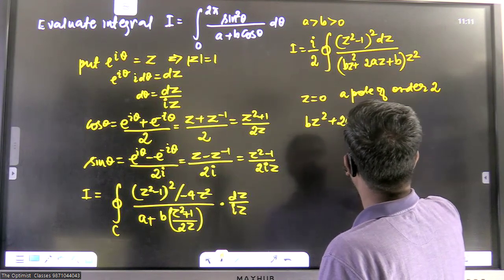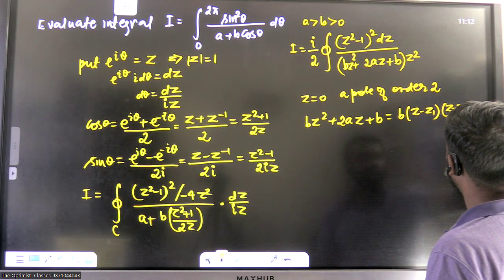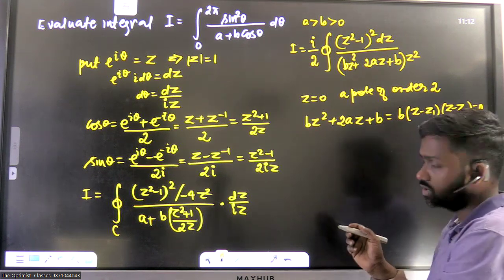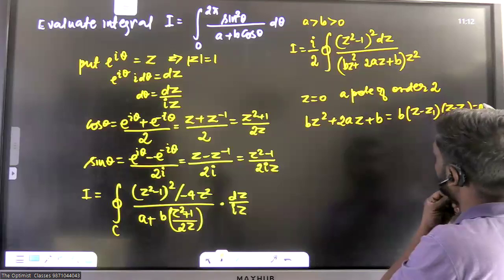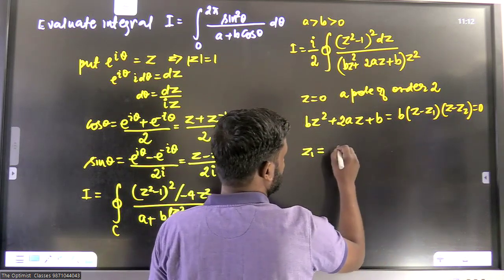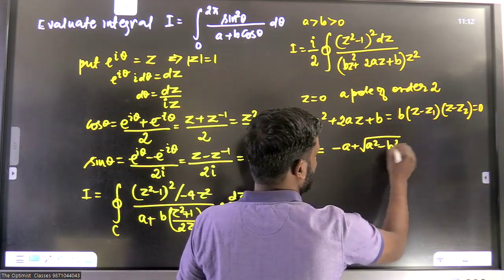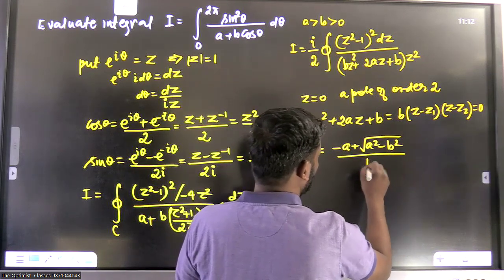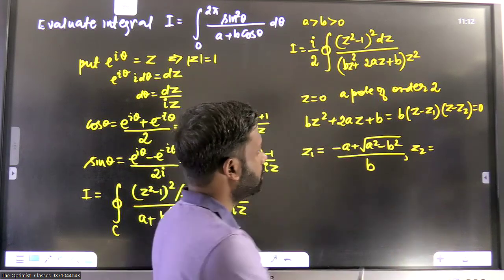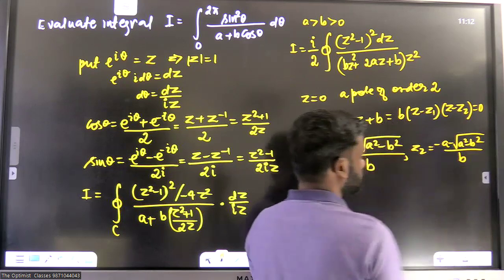We can write bz² + 2az + b as b(z − z₁)(z − z₂). Solving this quadratic, the two roots are: z₁ = (−a + √(a² − b²))/b and z₂ = (−a − √(a² − b²))/b.